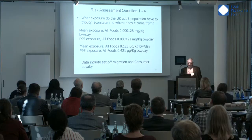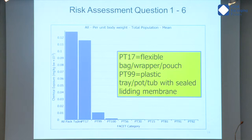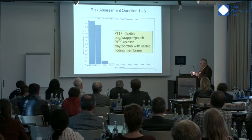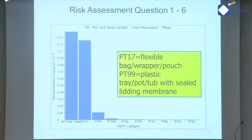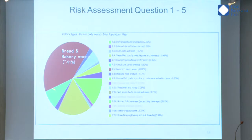It included consumer loyalty and set-off. We found that the biggest group driving the exposure was bread and bakery wares, with flexible wrappers and the plastic top being dominant. This shows total exposure and exposure per pack type — each of the 102 pack types in the database, which consist of different layers put together. This is by far the biggest driver. Going back, you can find out which foodstuff is driving it, and you can do this analysis either way.